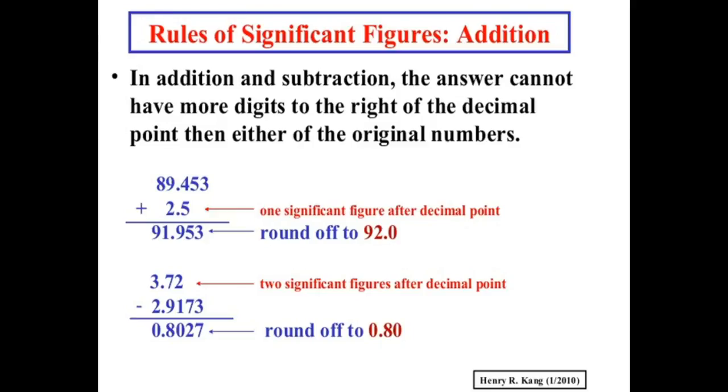Similarly, 3.72 minus 2.9173. 3.72 has two significant figures after the decimal point, so the answer 0.8027 must be rounded off to 0.80. 0.80 has two significant figures.